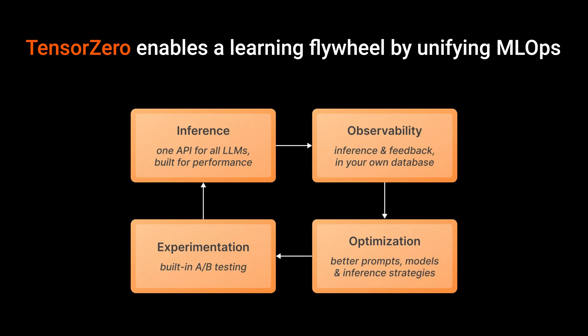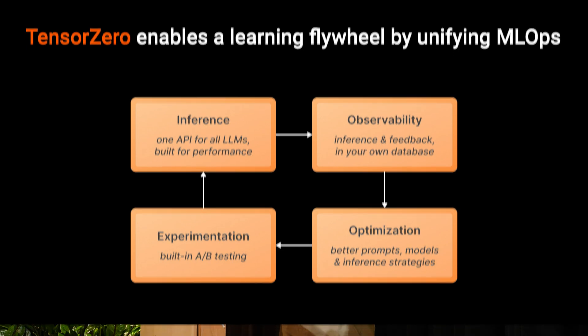What we're building at Tensor Zero is a learning flywheel that unifies machine learning operations. You integrate with one API as a gateway that connects with every major LLM provider as well as open source serving frameworks. When you're using that gateway in production, it dumps structured logs in a form that allows many different kinds of optimizations. You might optimize your prompts with something like DSPy, fine-tune open or closed source models, do reinforcement learning, or spend extra tokens at inference time for inference-time optimizations. All of that comes out of the same database and data model, so you don't have to worry about ETL or duct-taping tools together.